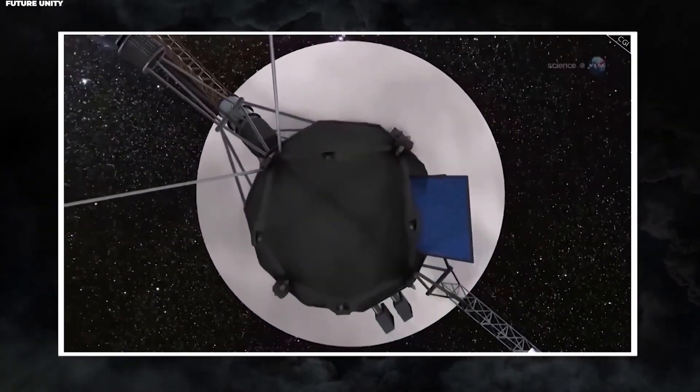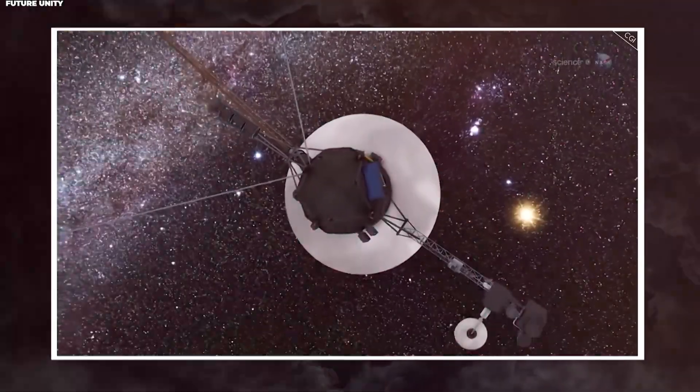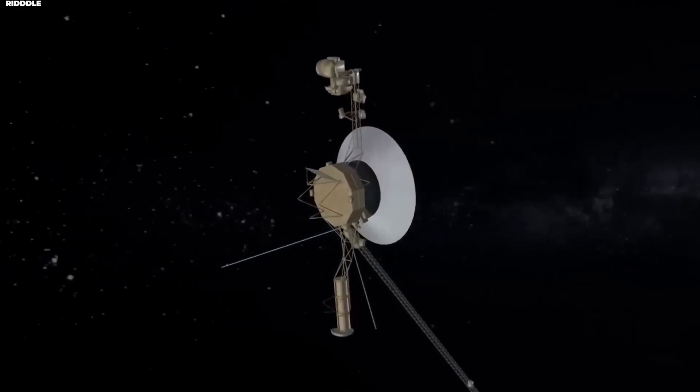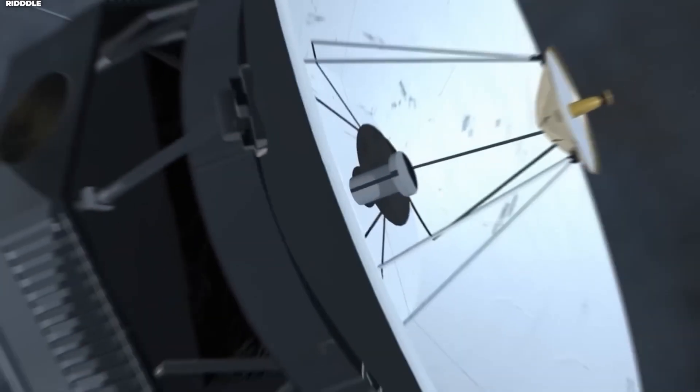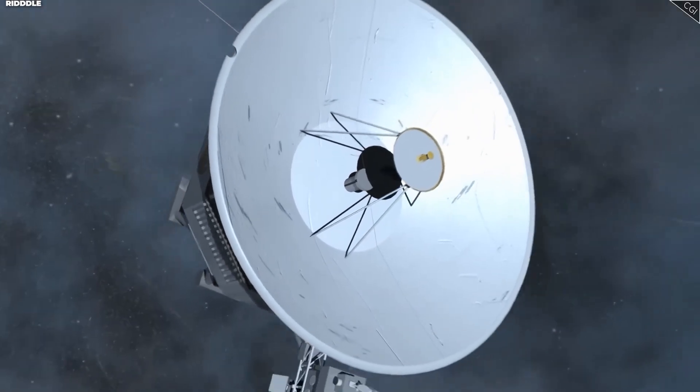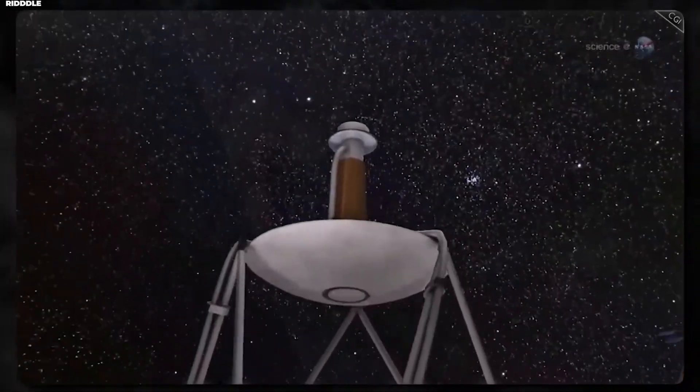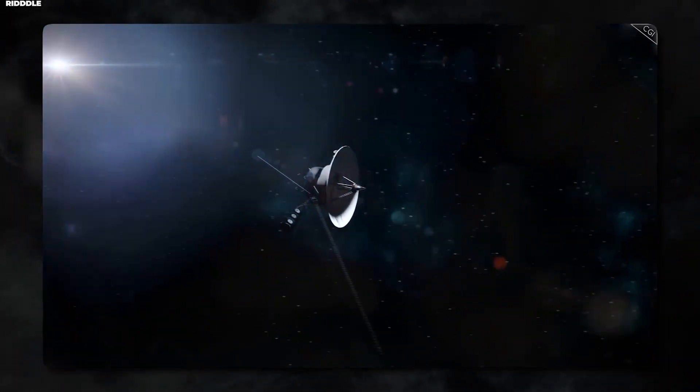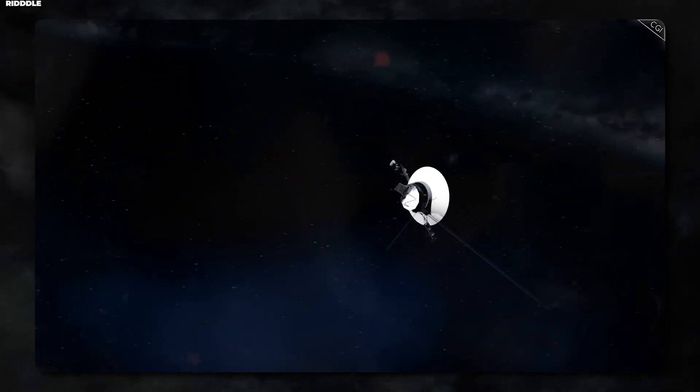Commands were carefully crafted and transmitted to Voyager 1. Remember there's that 22-hour communication delay. You send a command, wait 22 hours for it to reach the spacecraft, and then wait another 22 hours for confirmation that it was received and executed. This means any adjustment takes nearly two days to verify. There's no room for error and no opportunity for quick corrections.